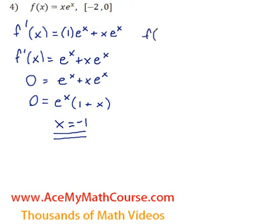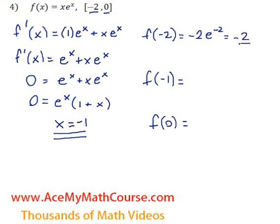So now we're interested in finding the values of the extremities as well as the critical number to find the absolute maximum and the absolute minimum. So f of negative 2, that's going to be negative 2 e to the power of negative 2, or negative 2 over e squared, which is roughly equal to negative 0.2707.